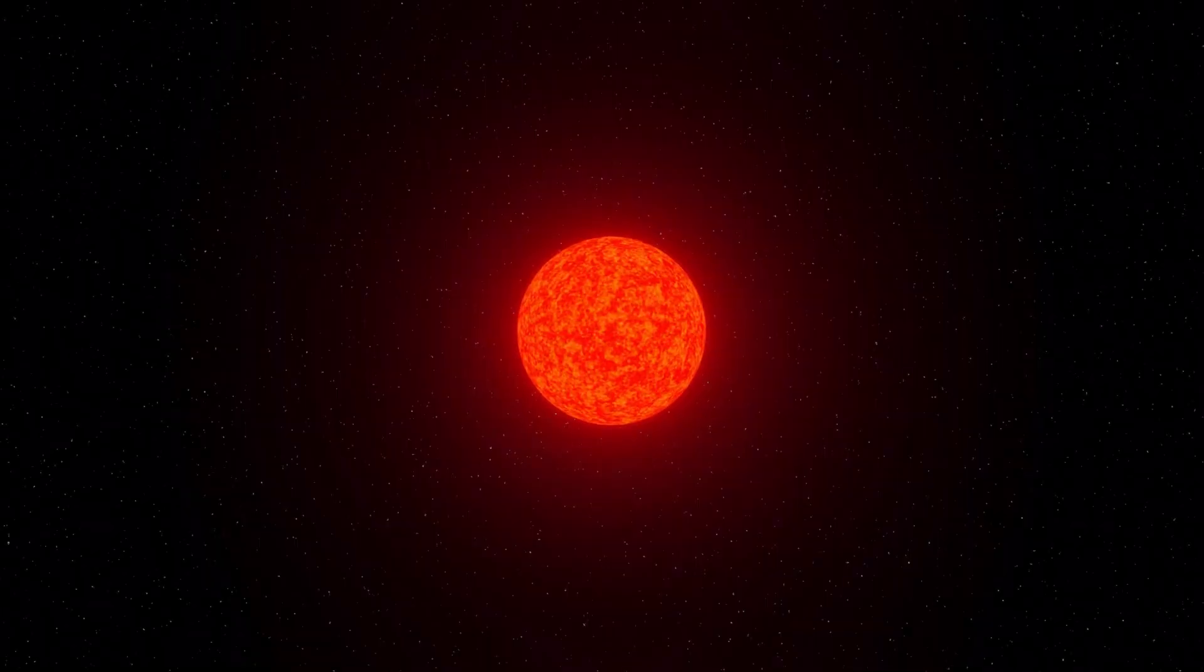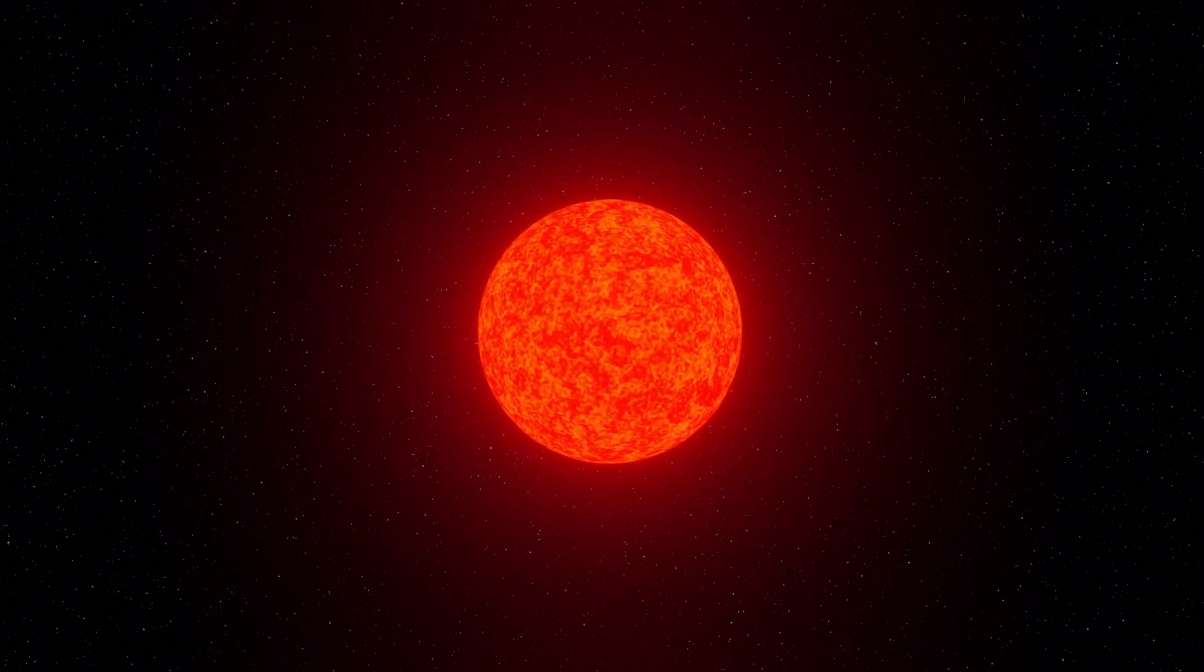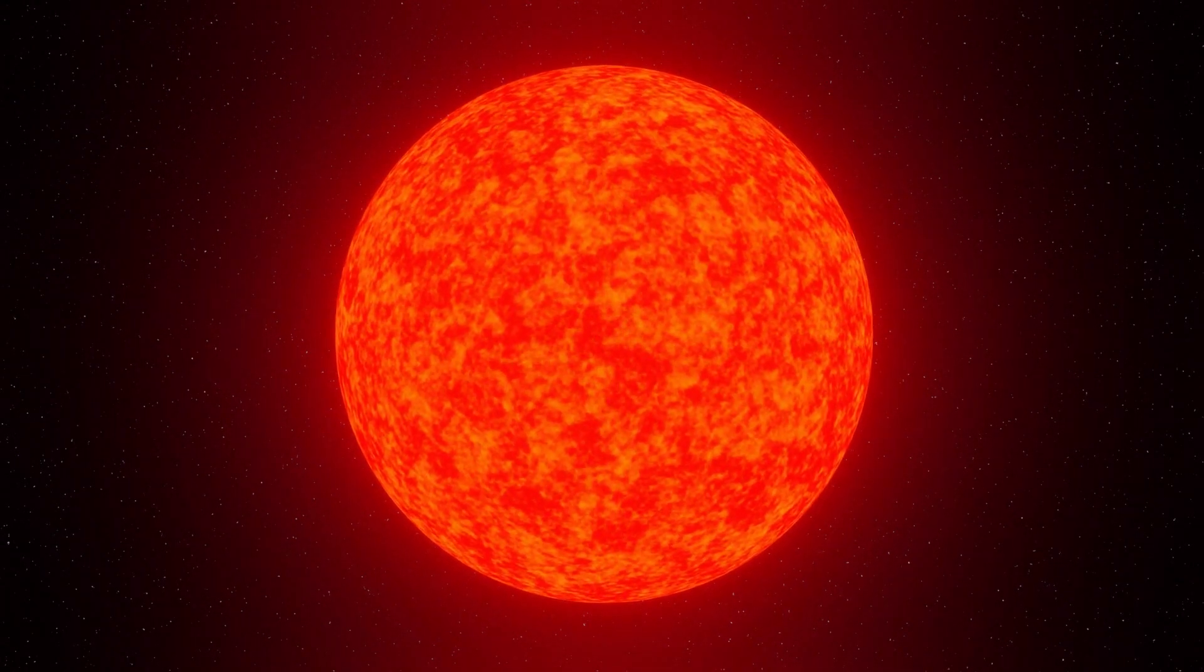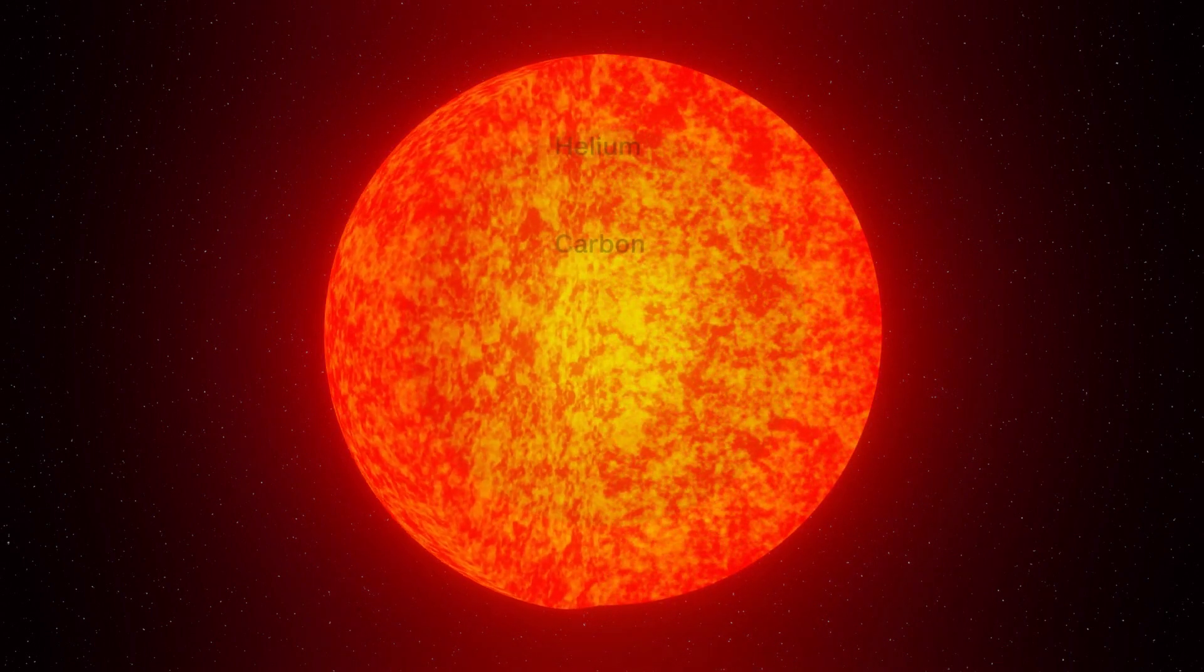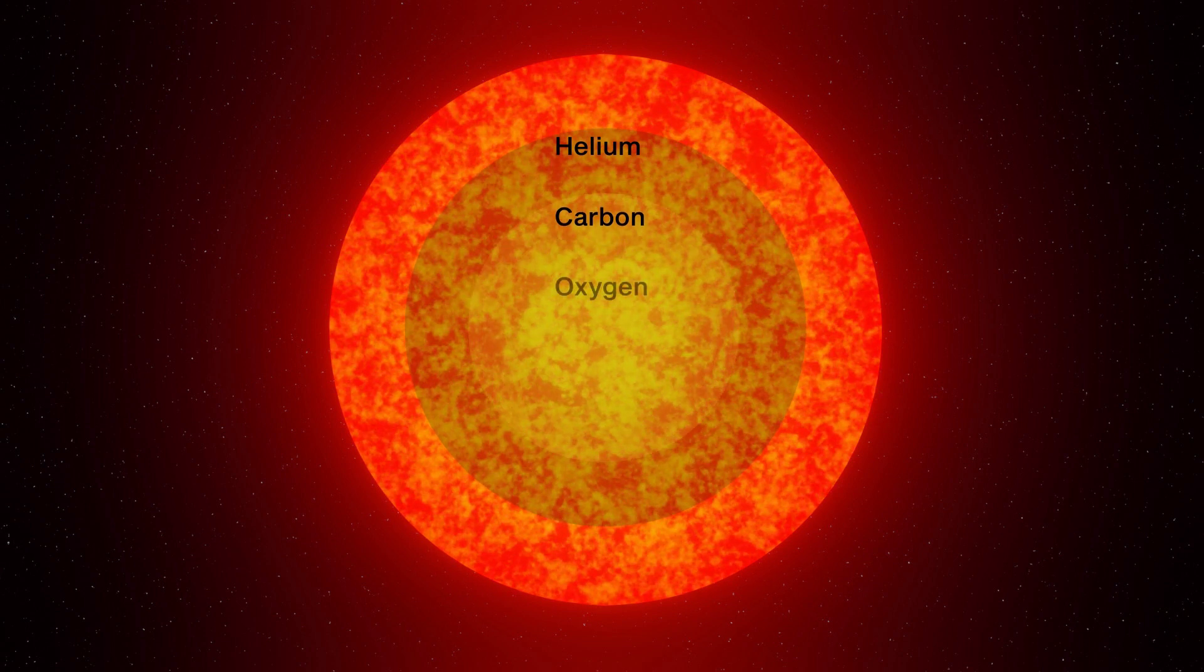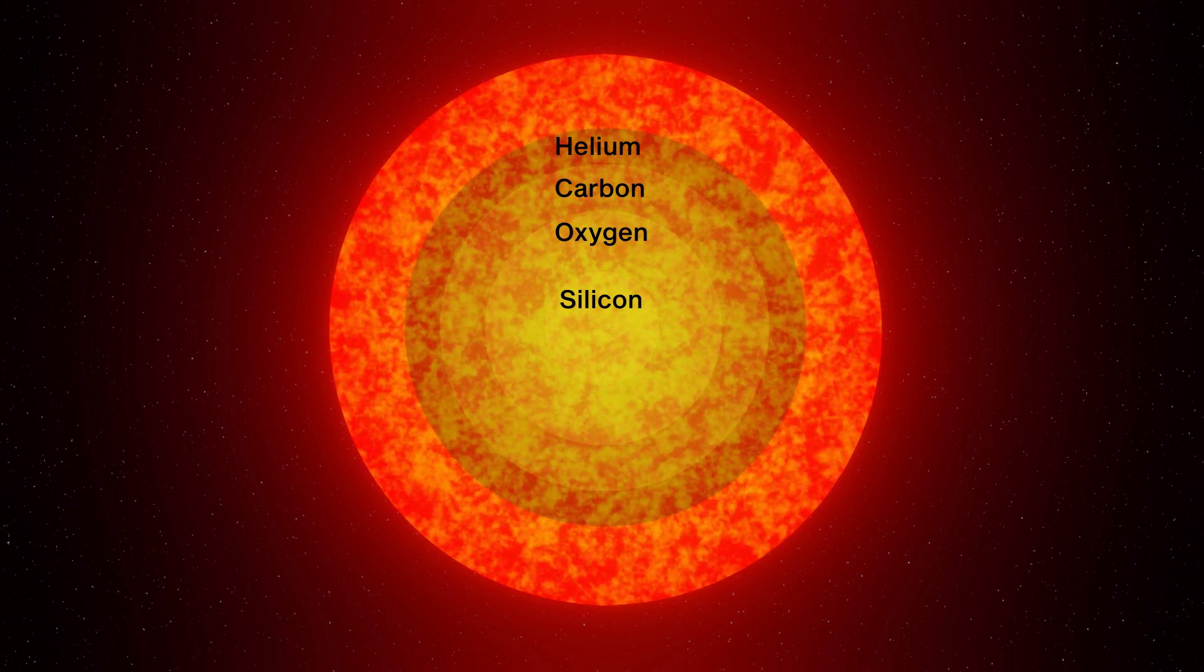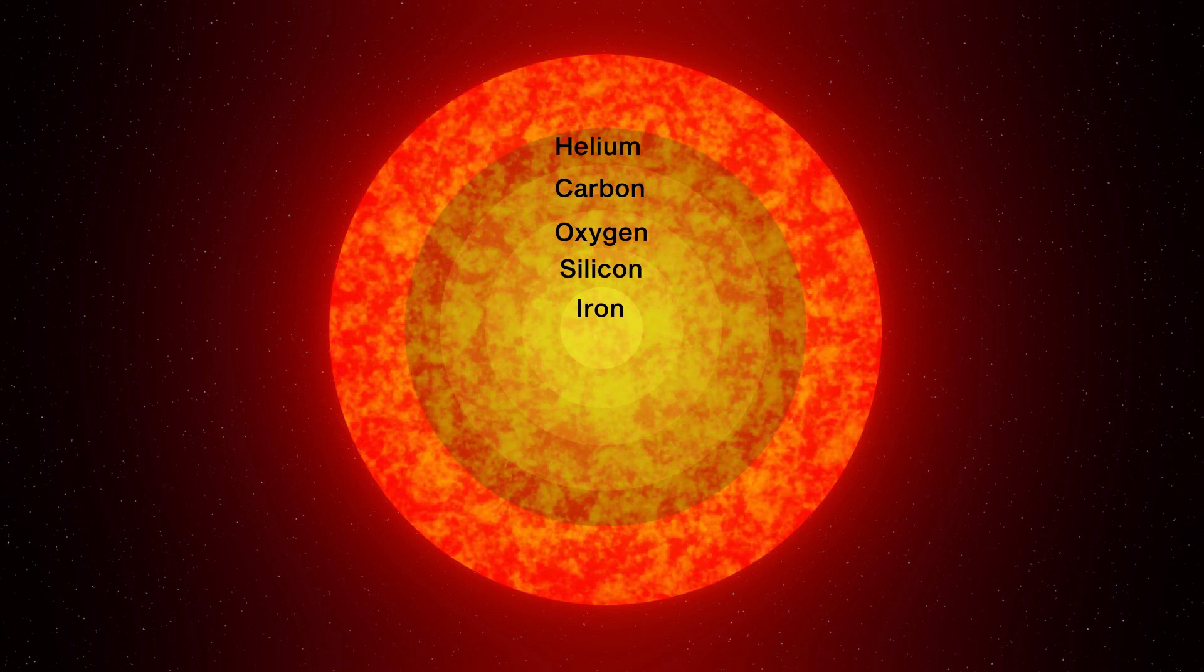But more massive stars that are at least eight times heavier than the Sun are capable of producing supernova. These stars undergo similar processes as the Sun but in a much shorter time, only a couple million years. Once all helium is fused into carbon, the process repeats. After fusion of helium, a few more fusion cycles follow: carbon, oxygen, and silicon. Each fusion cycle lasts a much shorter time. The last cycle, where silicon is fused into iron, only lasts around a single day.